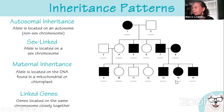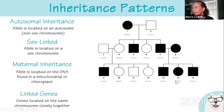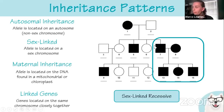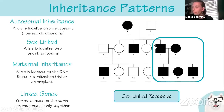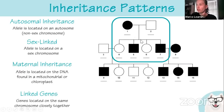Looking at another pedigree: if you see an affected female and all the males from that female are affected, that tells you it's sex-linked recessive. The female was affected because she got the trait from both her mother and father. The males got the X chromosome from their mother — since they don't have a second X, you see the trait.